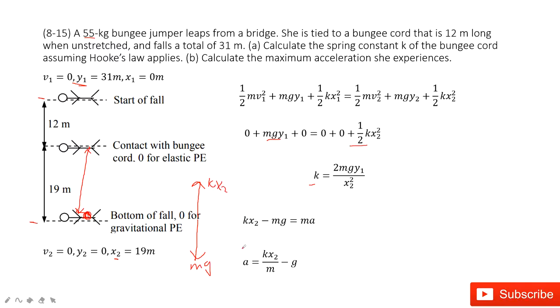So now the net force is kx2 minus the gravity equals the mass times acceleration. This comes from Newton's second law. In this equation, we can find the acceleration a.